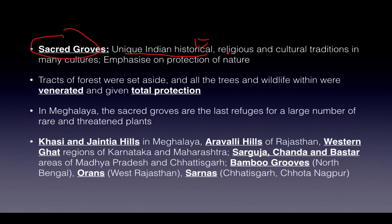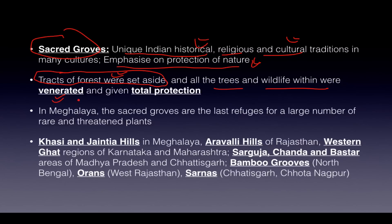Sacred groves are a unique Indian historical tradition rooted in religious and cultural practices seen in many cultures, emphasizing the protection of nature. Tracts of forest are set aside for sacred use, and all trees and wildlife within them are venerated and given total protection. They are especially seen in Meghalaya's Khasi and Jaintia Hills and are the last refuge for many rare and threatened plants. Examples include the Aravalli Hills of Rajasthan, Western Ghats of Karnataka and Maharashtra, Sarguja, Chanda and Bastar areas of MP and Chhattisgarh, bamboo groves of North Bengal, Orans in West Rajasthan, and Sarnas in Chhattisgarh and Chota Nagpur region.